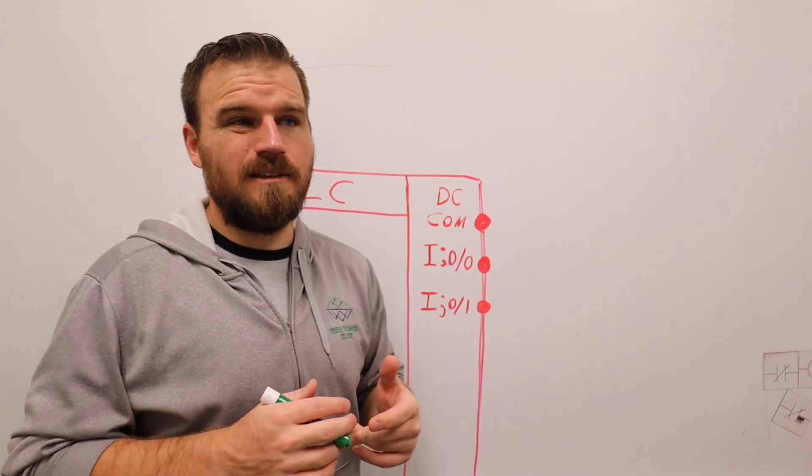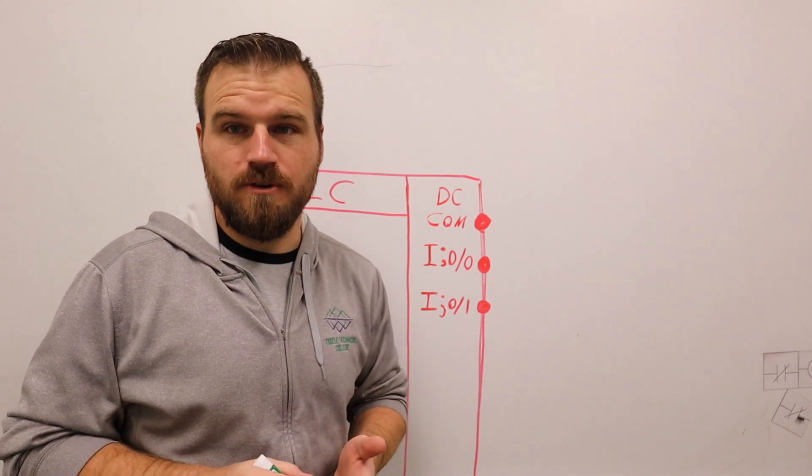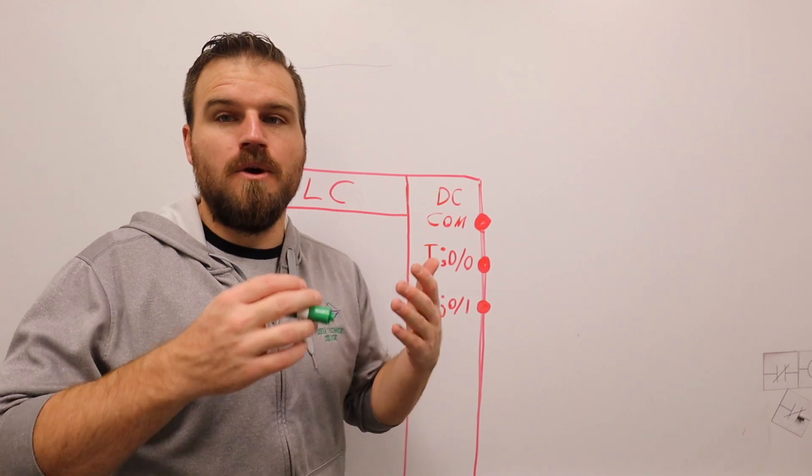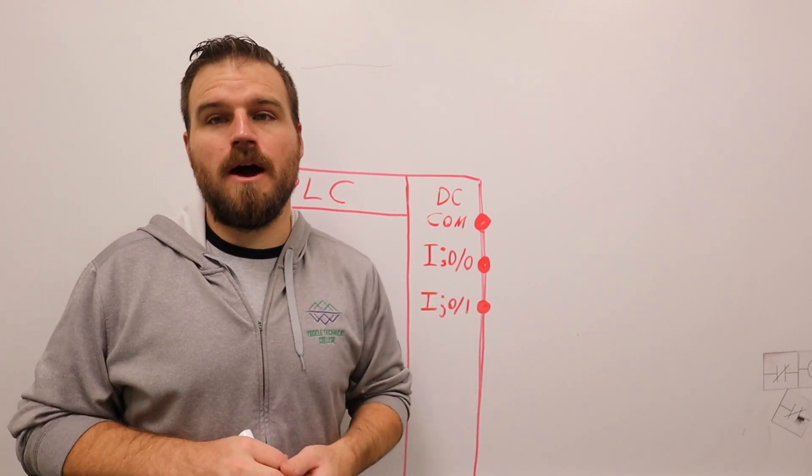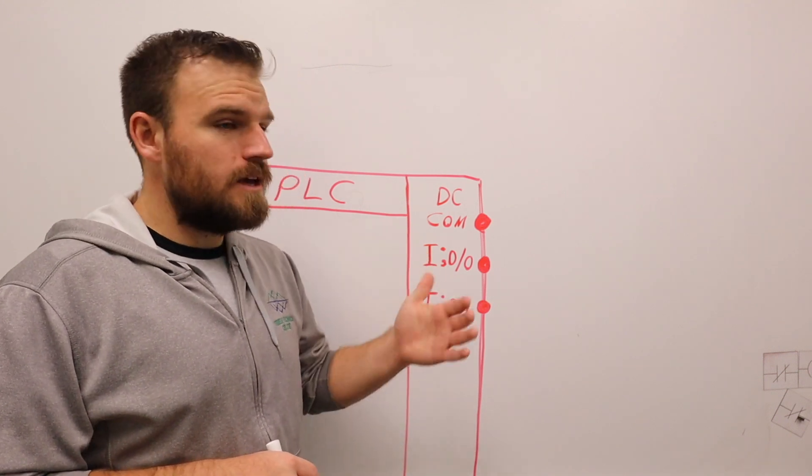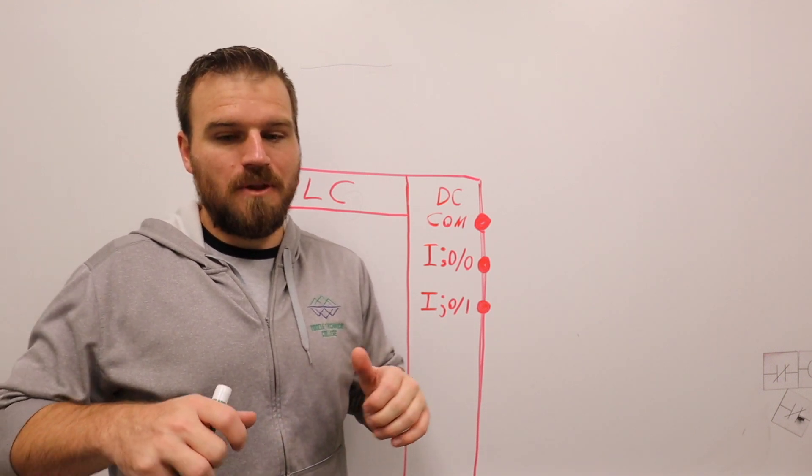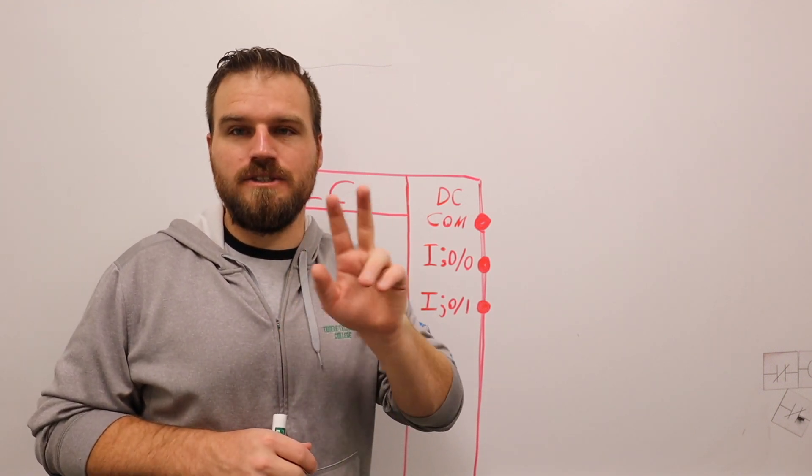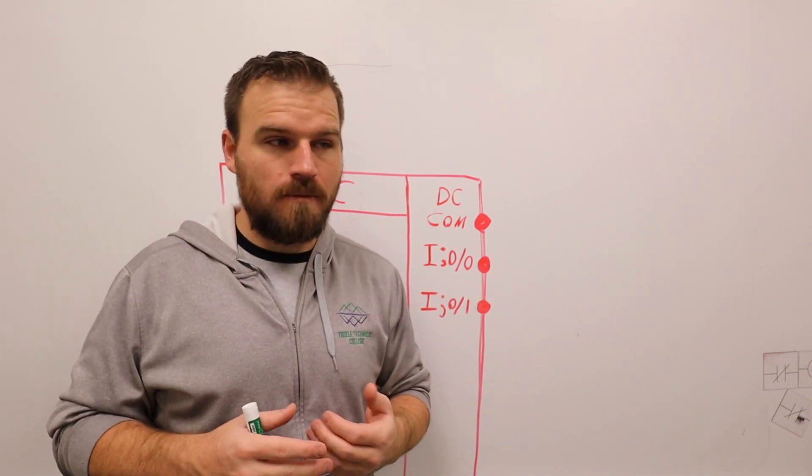So this is probably the number one most difficult thing for students to do. They constantly have problems wiring together our inputs or outputs. A lot of people will go in and they'll actually hook up two switches in series inside of the circuit, and then that'll create a whole bunch of problems.